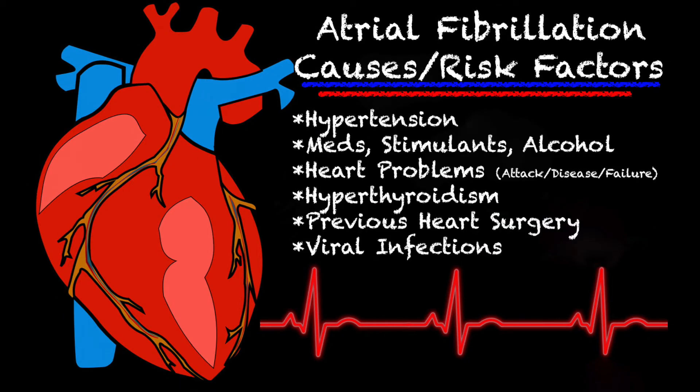Some of the causes of AFib can include hypertension, medications, stimulants, alcohol especially, and heart problems. When I say heart problems, it could be a heart attack, heart disease, heart failure, valve problems, congenital problems, etc. Hyperthyroidism can cause AFib. Previous heart surgery can cause AFib, and so can viral infections.